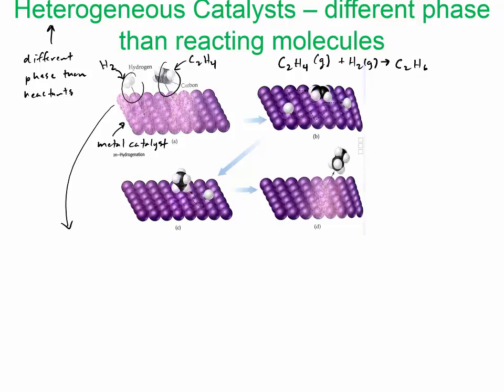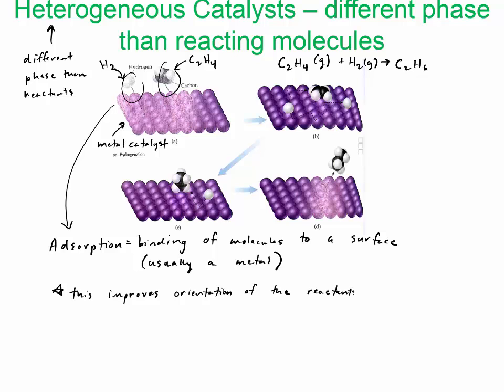And what happens here is, by adhering here, what it does is, the adhering process is called adsorption, so it's the binding of molecules to a surface, and that's usually going to be a metal. And what it does is it improves the orientation, so this tends to improve the orientation of the reactants and leads to more effective collisions.